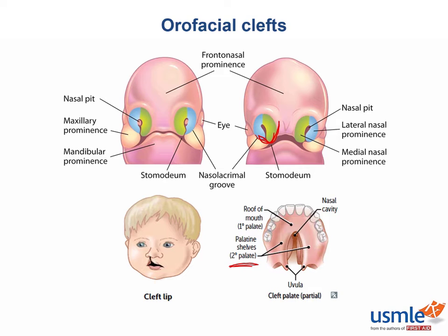When cleft palate occurs, what else can you often observe? A split uvula. It's important to know that cleft lip and cleft palate have two distinct etiologies yet often occur together. It's even more important to know that both of these conditions have a multifactorial inheritance pattern.